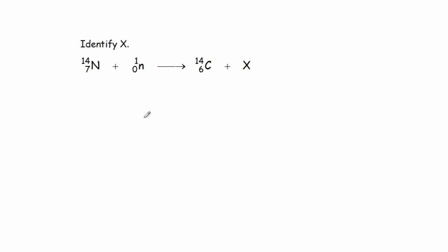Here's another problem. Nitrogen-14 plus a neutron yields carbon-14 plus some unknown particle. Now, we need to identify what this unknown particle is. Take the same approach. The sum of the superscripts on the left side is 15. That is 14 plus 1.